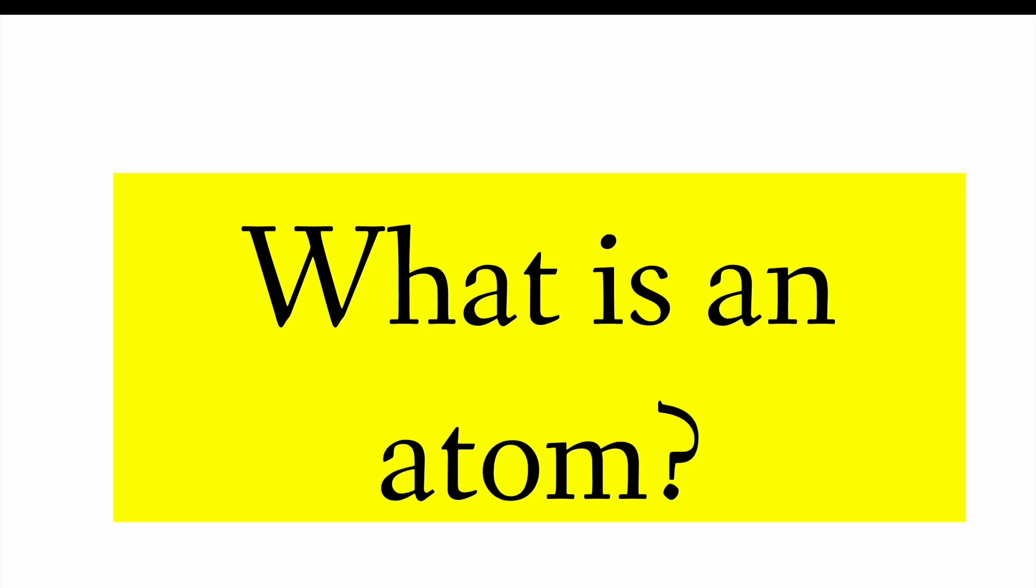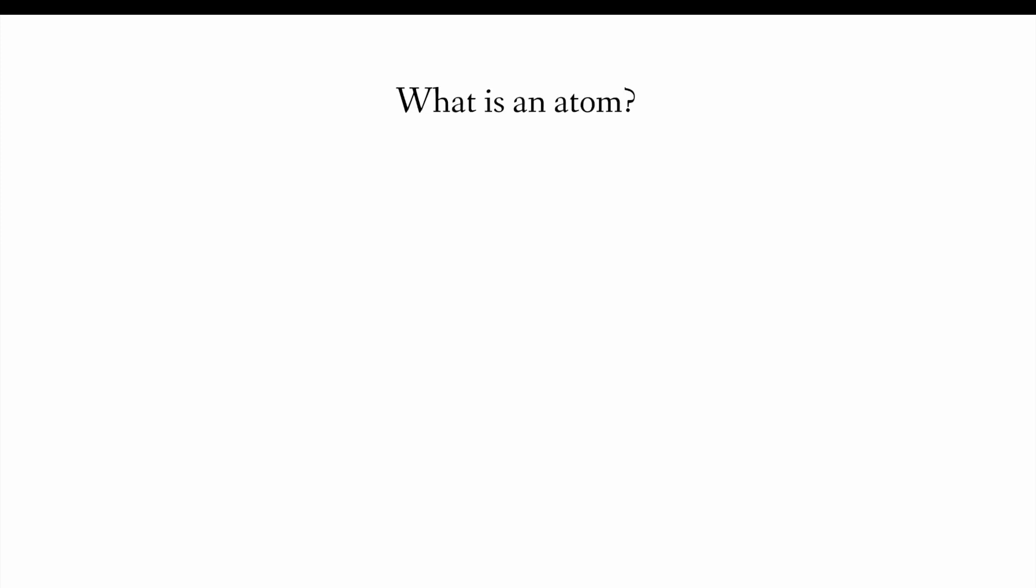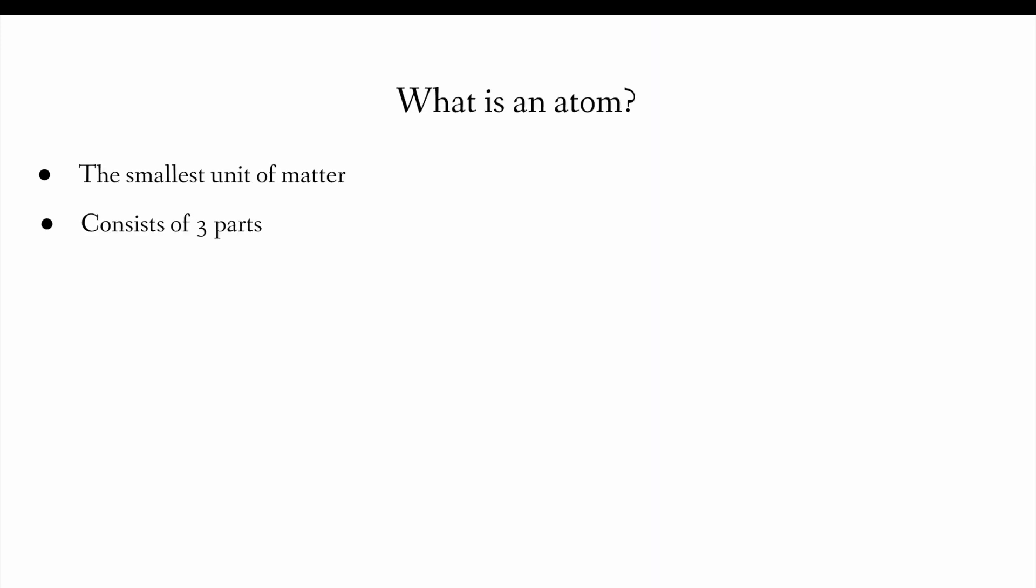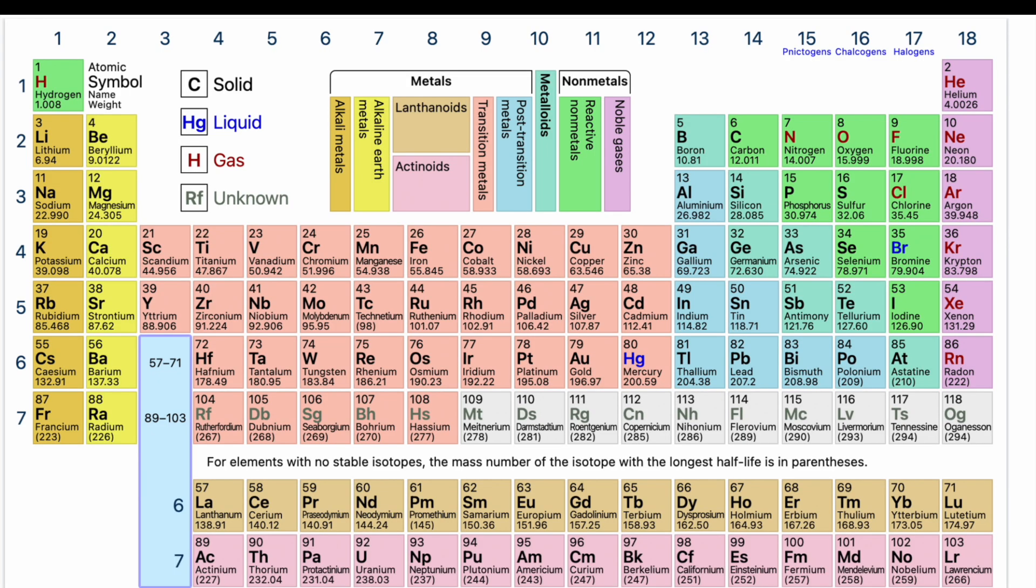But first, we have to understand what is an atom. So, what is an atom? It is the smallest unit of matter. It's like the Legos or the building blocks of all matter. And it consists of three parts, protons, neutrons, and electrons. And all of this will play a part into understanding how to read the periodic table.